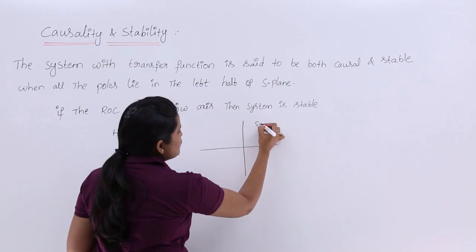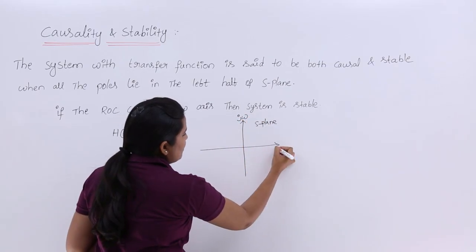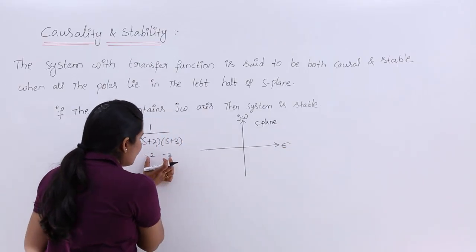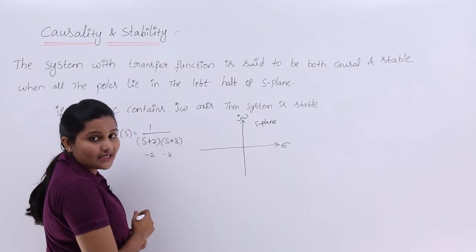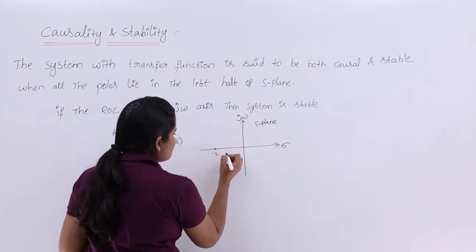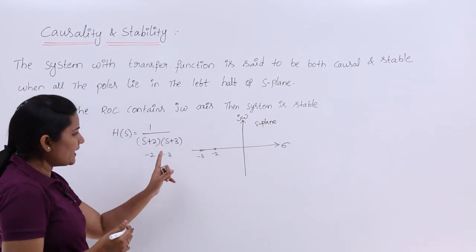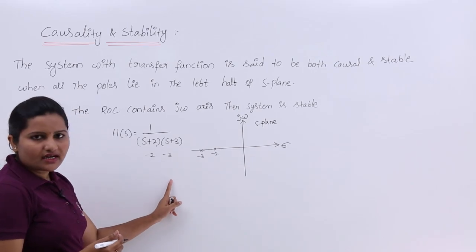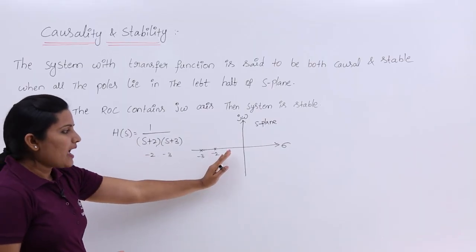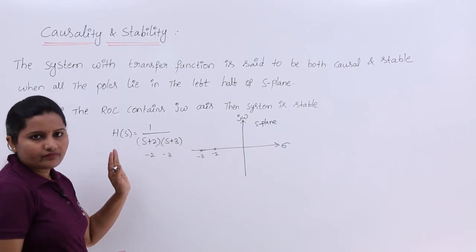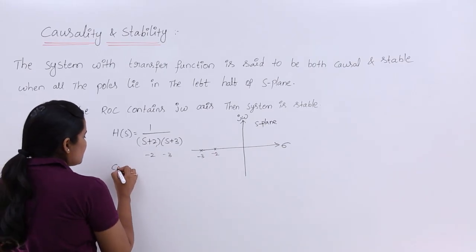In the S-plane, this is the jω axis and this is the real axis. The poles at -2 and -3 correspond to real part of S — that is σ — at σ = -2 and σ = -3. According to the conditions, since all poles lie in the left half of the S-plane, this system is causal.